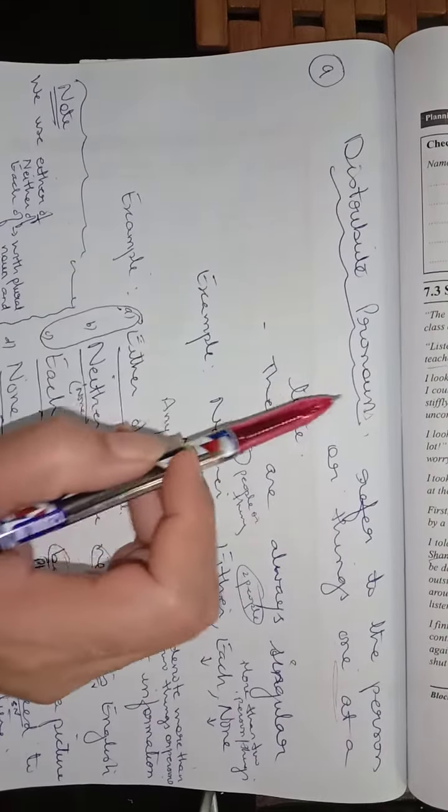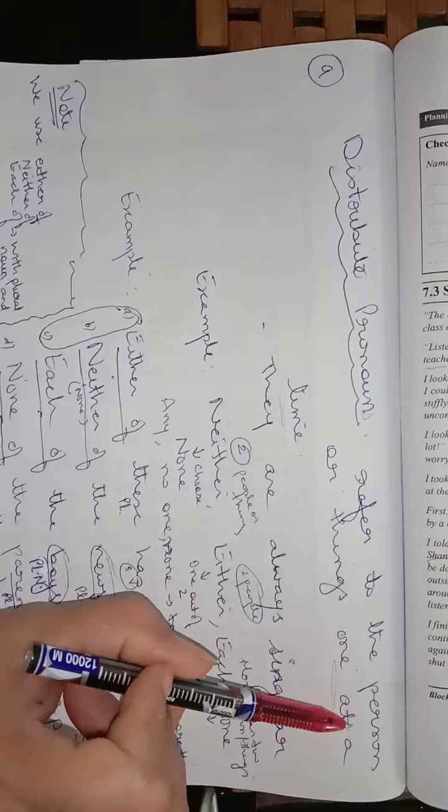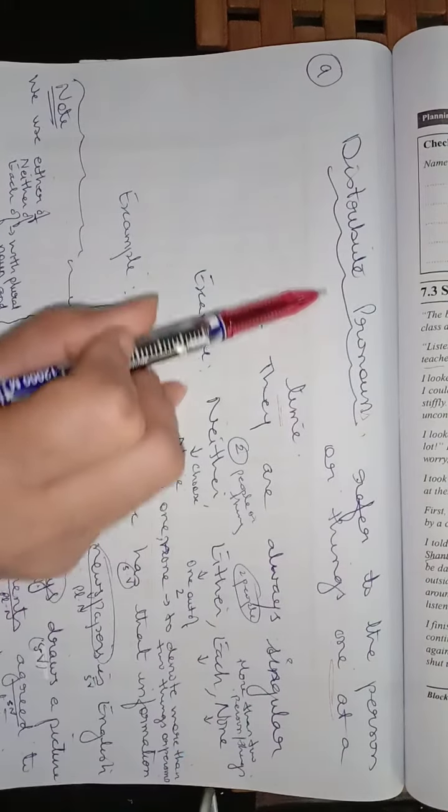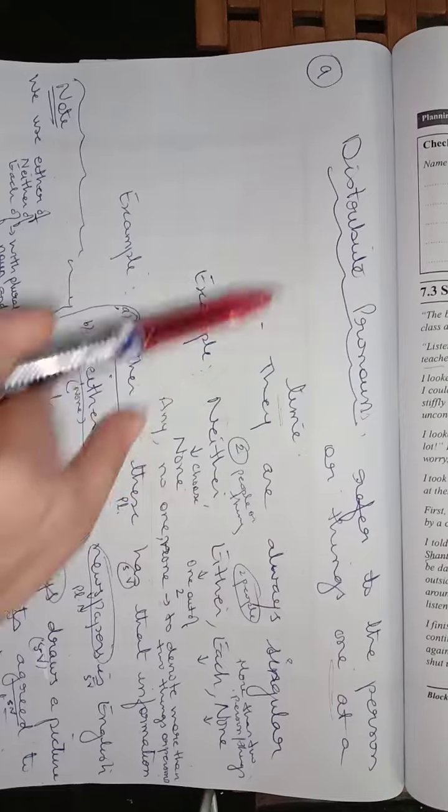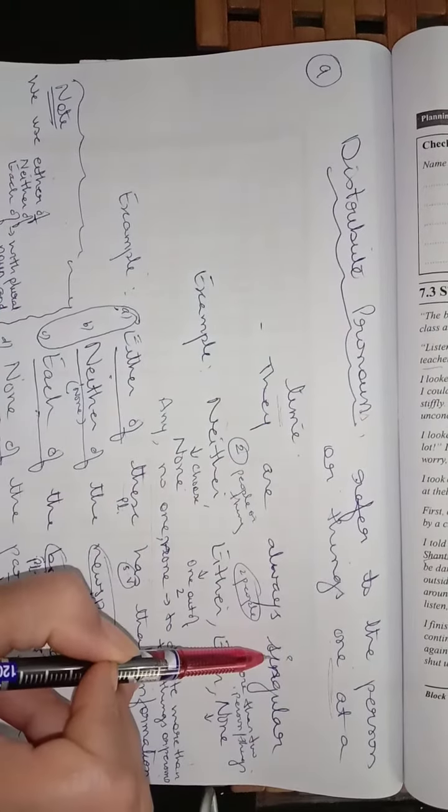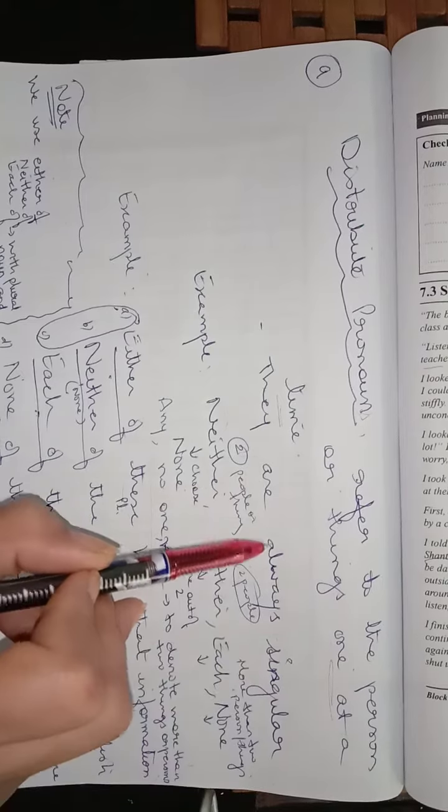Distributive pronouns. Distributive pronouns refer to the person or things one at a time. They are always singular.